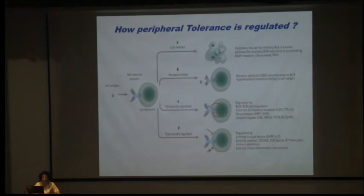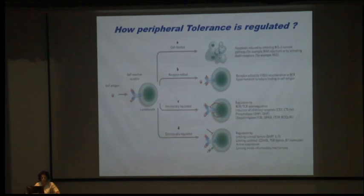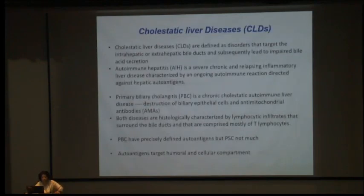T cell tolerance involves negative selection and development of regulatory T cells. Peripheral tolerance is regulated intrinsically — where self-antigen binding leads to endocytosis of BCR and TCR rather than surface expression — or extrinsically via IL-7 or BAFF, which also limit TCR or BCR signaling, thereby limiting self-antigen space.